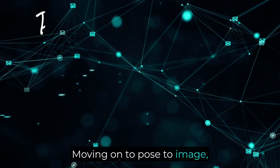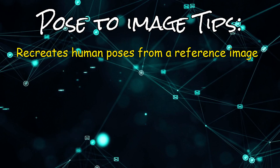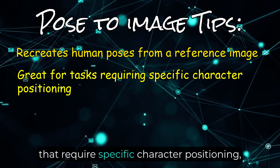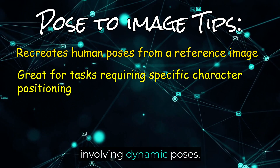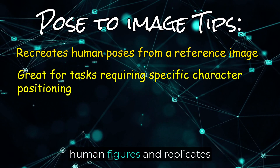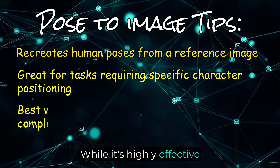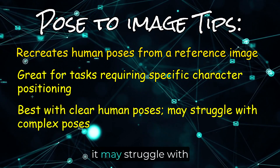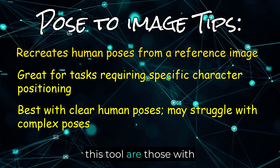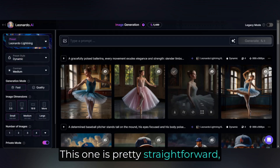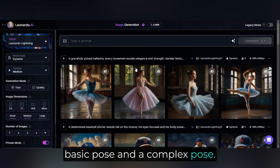Moving on to Pose to Image, which focuses on recreating human poses from a reference image. This tool is great for tasks that require specific character positioning, such as animations or illustrations involving dynamic poses. It scans the reference image for human figures and replicates their poses in the generated image. While it's highly effective for straightforward poses, it may struggle with particularly complex ones. The best guidance images for this tool are those with clear human poses. I'll do a demonstration to show the difference between a basic pose and a complex pose — I've got some ballerinas here to help us.